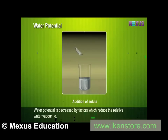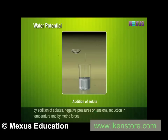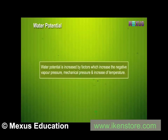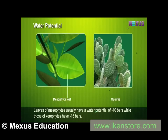Water potential is decreased by factors which reduce the relative water vapour — by addition of solutes, negative pressures or tensions, reduction in temperature, and by matric forces. Water potential is increased by mechanical pressure and increase of temperature. Leaves of mesophytes usually have a water potential of −10 bars, while those of xerophytes have −15 bars.